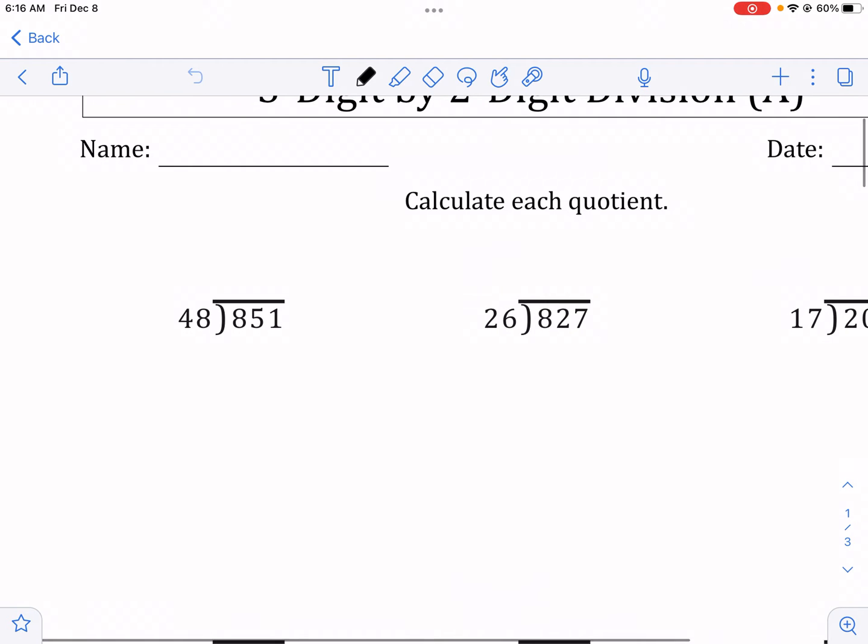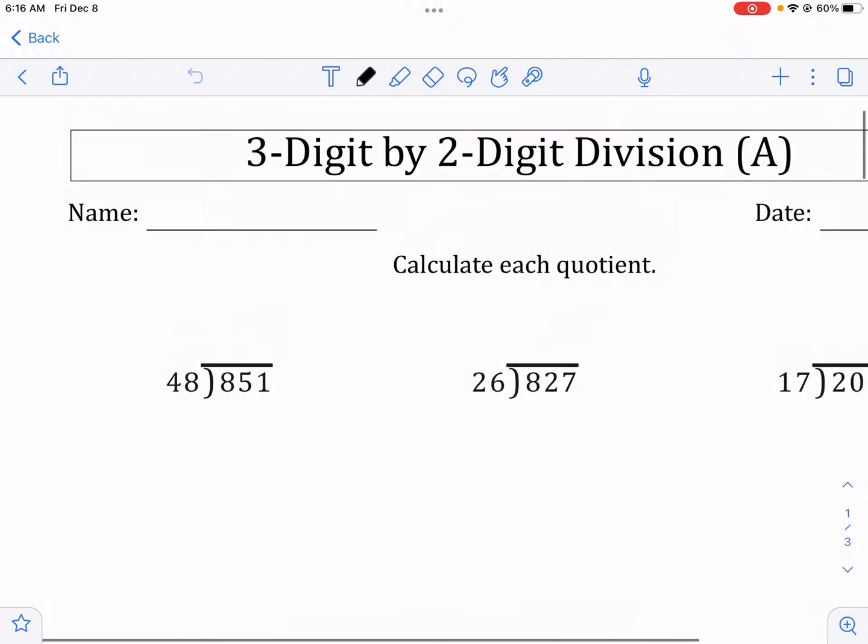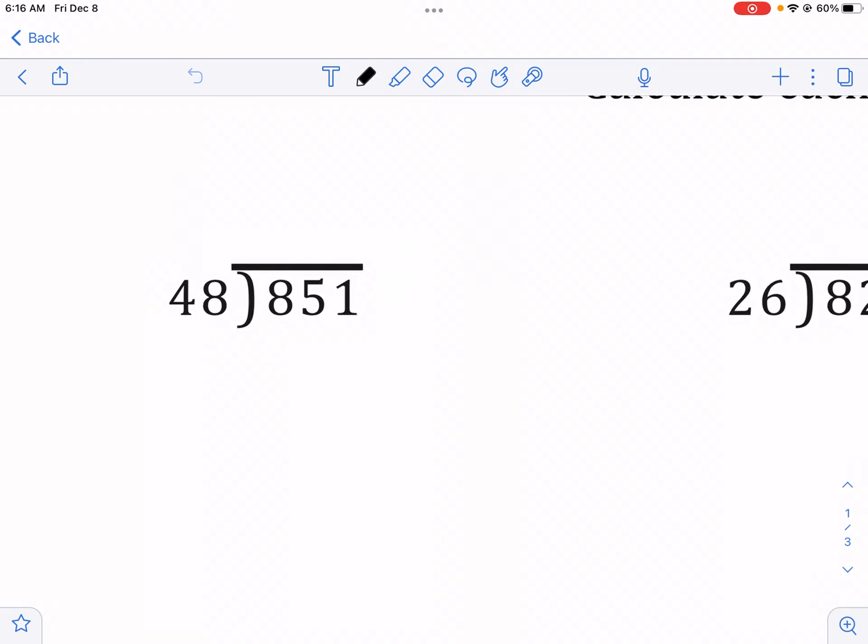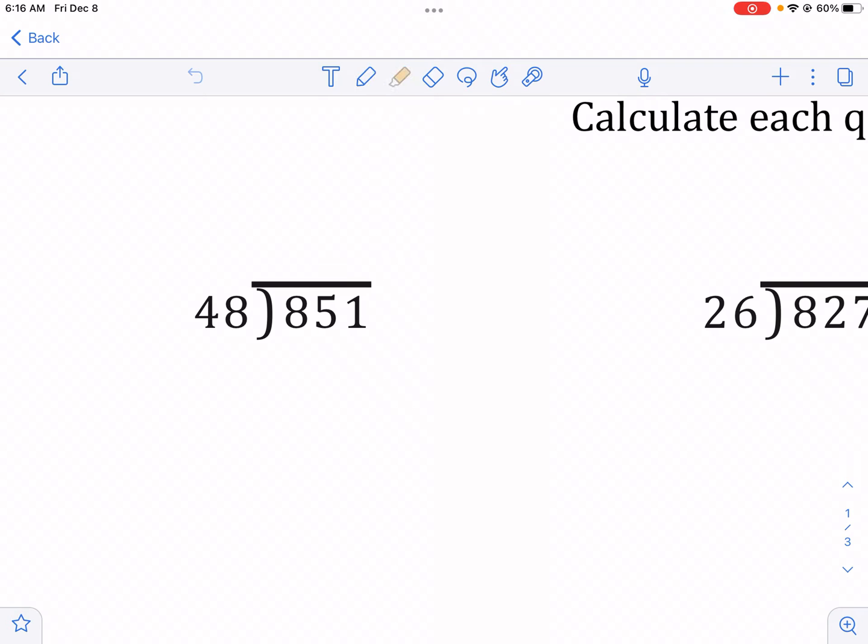So let's go ahead and talk about what is long division and how do we do this. I'm going to talk about two different methods and the first is going to be the standard algorithm. Long division is just kind of like the inverse of multiplication. So what two numbers times each other will equal this number called the dividend.